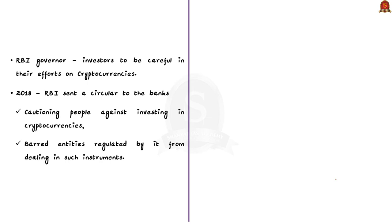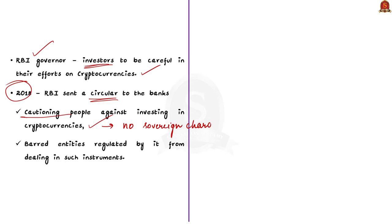Now let us discuss the news in the article. According to the article, the RBI governor insists that investors be careful in their efforts on cryptocurrencies. According to the RBI governor, the RBI's stand on cryptocurrencies remains the same as mentioned in the 2018 circular. In 2018, RBI sent a circular to banks cautioning people against investing in cryptocurrencies because they do not have sovereign character — that is, they are not backed by the central government. RBI also barred entities regulated by it from dealing in such instruments. The RBI governor also mentioned the volatile nature of cryptocurrencies which has led to erosion of investors' wealth. One should make one's own appraisal and do due diligence before taking a call on investing in cryptocurrencies.